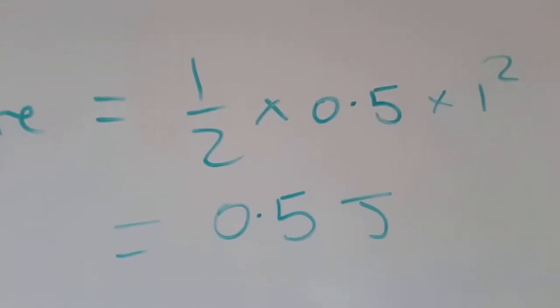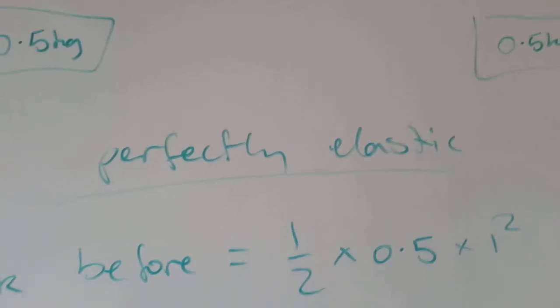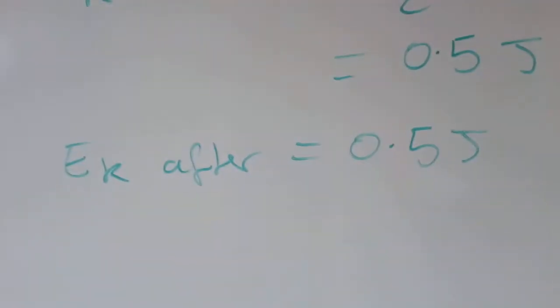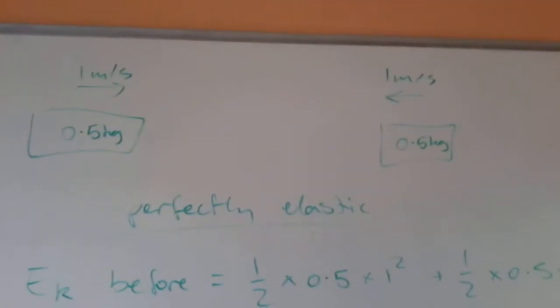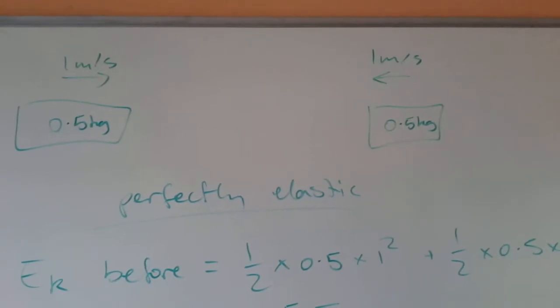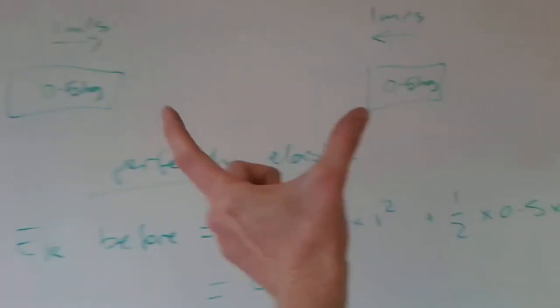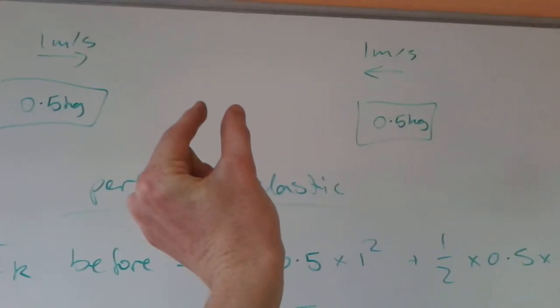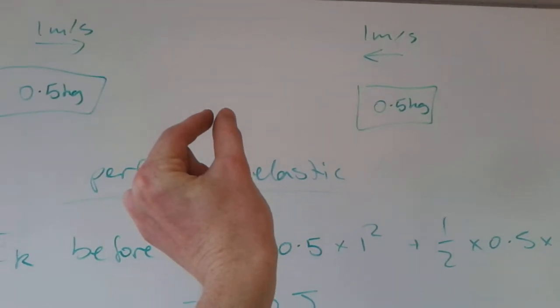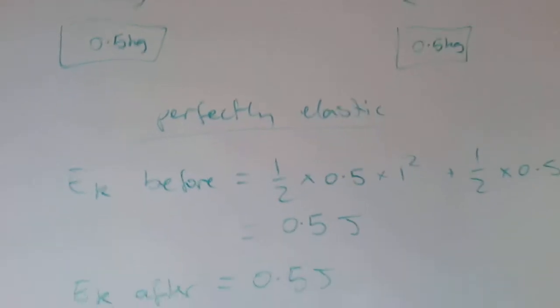Now we're saying the collision is perfectly elastic, so after the collision they're also going to have a total kinetic energy of half a joule. But in this collision these two trolleys are identical and they're moving towards each other with the same speed, so as they come together and the spring touches and they collide, they're both going to slow down and briefly come to a stop before the spring then pushes them apart.